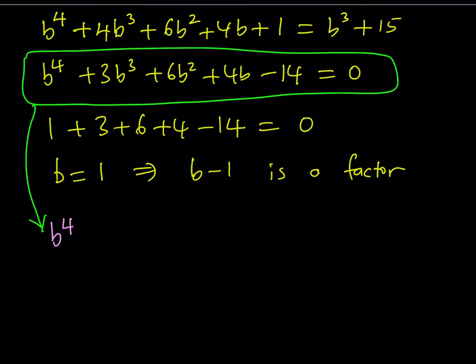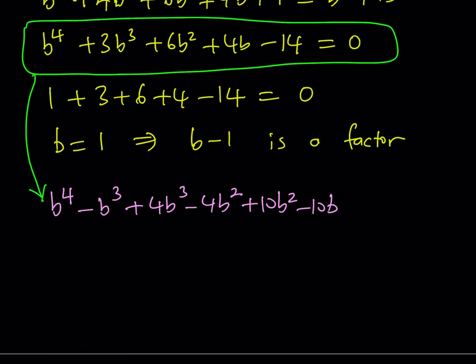So, this is what I'm supposed to do. Start with B to the fourth power and then subtract B cubed from it. So, notice that B minus 1 is a factor. But, I have 3B cubed, so I have to add 4B cubed. That means I need to subtract 4B squared. But, I have 6B squared, so I need to add 10B squared. Then, I need to subtract 10B to make it B minus 1. You know, but I have 4B, so I need to add 14B. And, I end up with subtracting 14, which balances out and everything looks good.